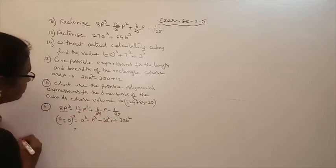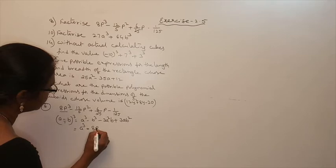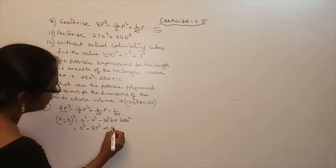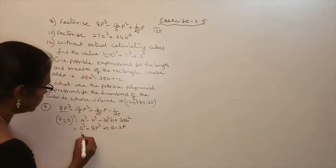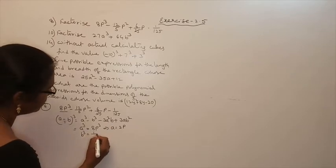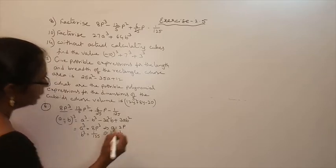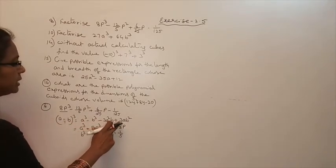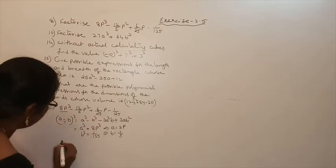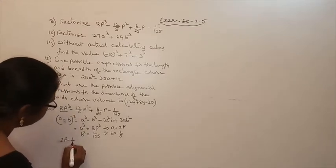Here, a³ is equal to 8p³, so a is equal to 2p. And b³ is equal to 1/125, so b is equal to 1/5. These are the values. The expression is in the form of a³ minus 3a²b plus 3ab² minus b³, so the answer is (2p minus 1/5) whole cube.